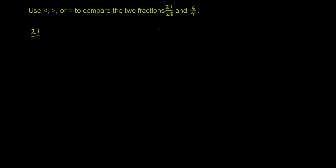So 21 over 28 — you can see that they are both divisible by 7. Let's divide both the numerator and the denominator by 7. We're doing the same thing to both, so we're not going to change the value of the fraction. 21 divided by 7 is 3, and 28 divided by 7 is 4. So 21/28 is the exact same fraction as 3/4. 3/4 is a simplified version of it.